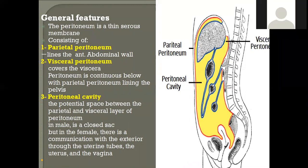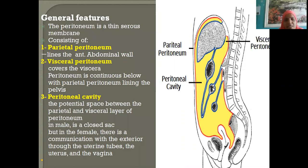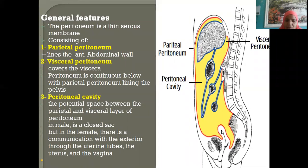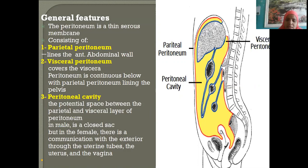The visceral organs include liver, stomach, transverse colon, and small intestines. Coming lower down in the pelvic cavity, in females we have three visceral organs: immediately behind the pubic symphysis is the urinary bladder, behind that is the uterus, and behind that is the rectum and anal canal.